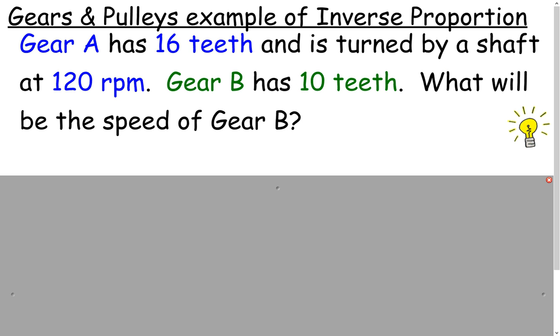Let's look at another example. This one has to do with gears and pulleys, and they're an example of inverse proportions. If gear A has 16 teeth and is turned by a shaft at 120 RPM and gear B has 10 teeth, what will be the speed of gear B? And here's a helpful hint.